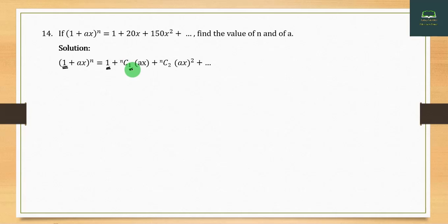Solution: (1 + ax)ⁿ = 1 + nC₁(ax) + nC₂(ax)² + ... By comparing coefficients: nC₁·a = 20, so na = 20.